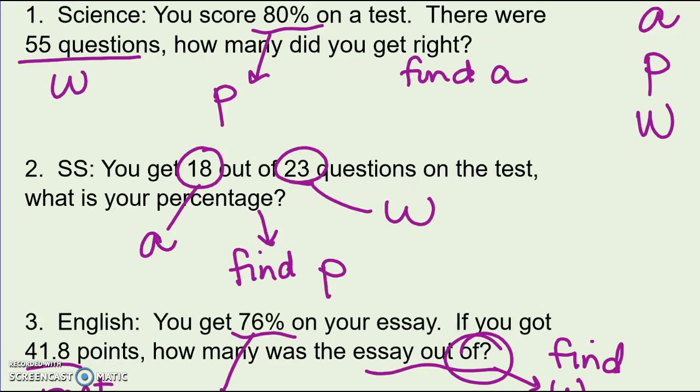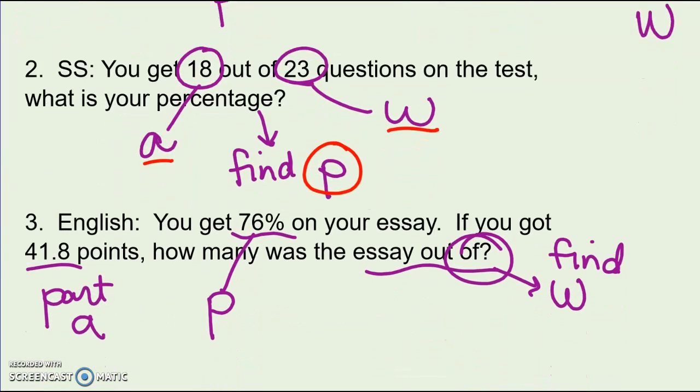I've labeled each part. In number one, it looks like I know the percent and I know the whole. I am looking for how many I got right, the part. In number two, I know the part I got. I know the total number of questions. I'm looking for the percent. And in number three, I know the percent and I know how many I got, my part. I'm looking for what it was out of, the whole. Now set it up. Remember, every time, write down A equals P times W. Then plug things in where they go and solve for whatever's missing. Pause and actually work and get the answers now.